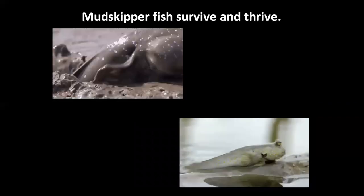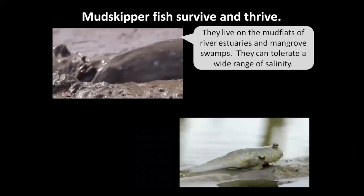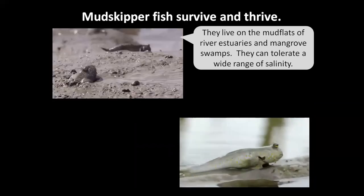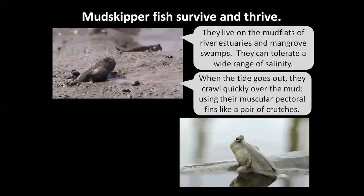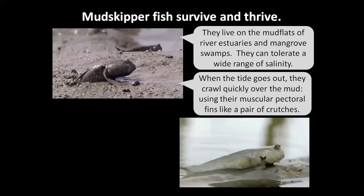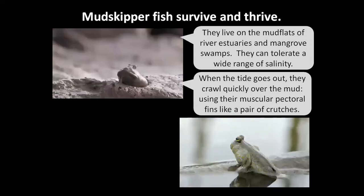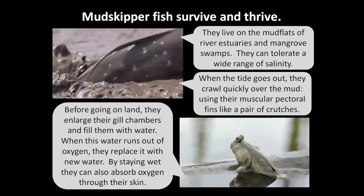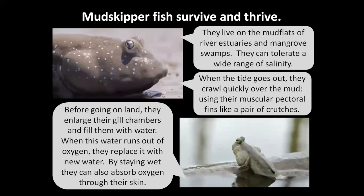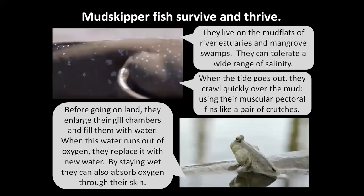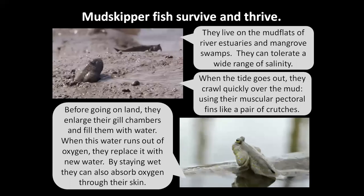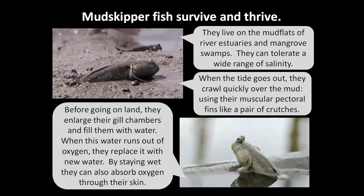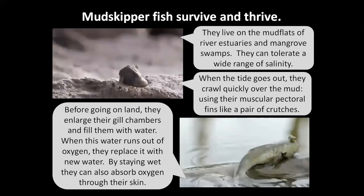Mudskipper fish survive and thrive. They live on the mud flats of river estuaries and mangrove swamps and can tolerate a wide range of salinity. When the tide goes out they crawl quickly over the mud using their muscular pectoral fins like a pair of crutches. Before going on land they enlarge their gill chambers and fill them with water. When this water runs out of oxygen they replace it with new water, and by staying wet they can also absorb oxygen through their skin.